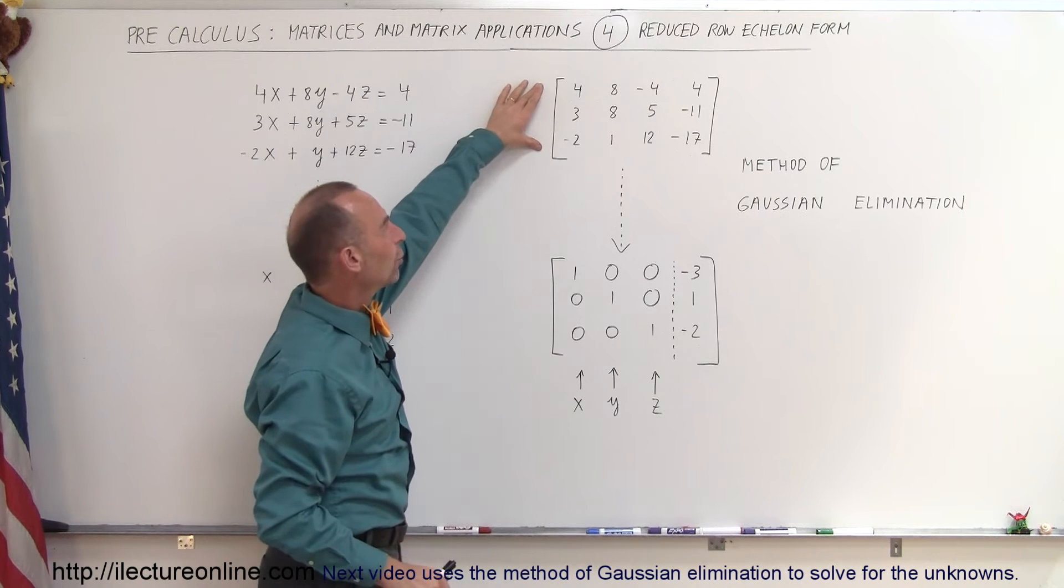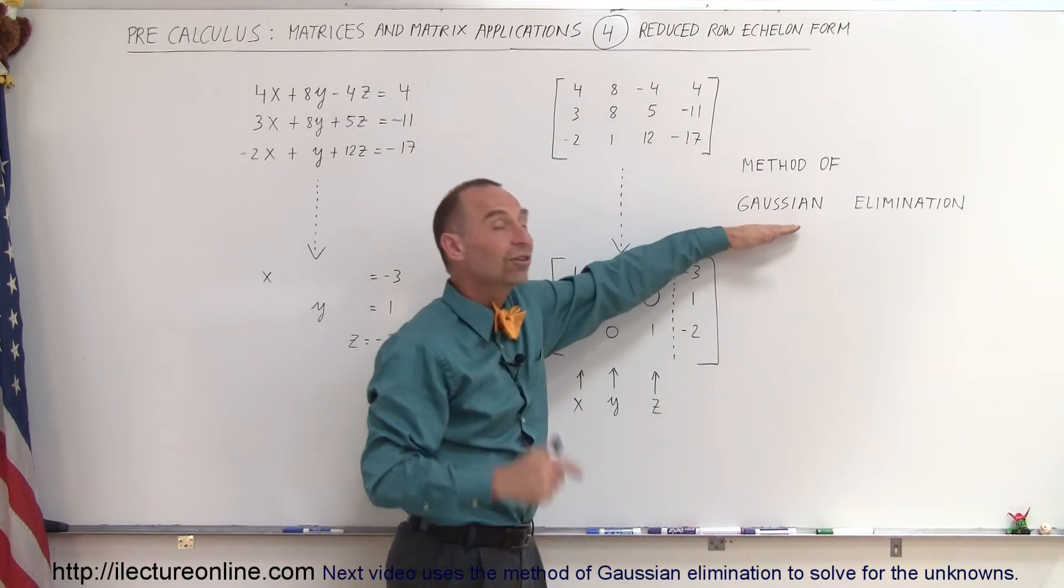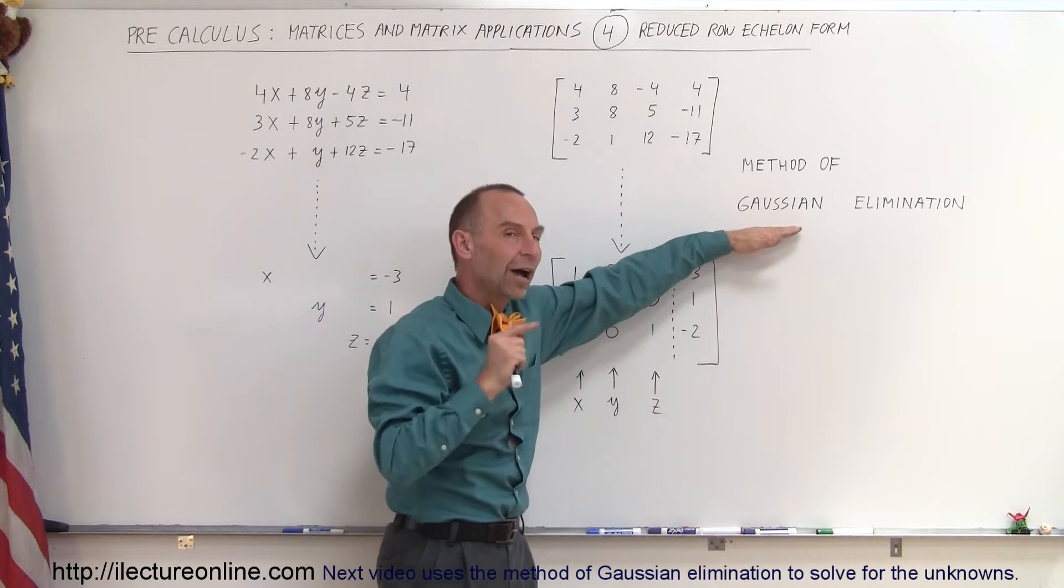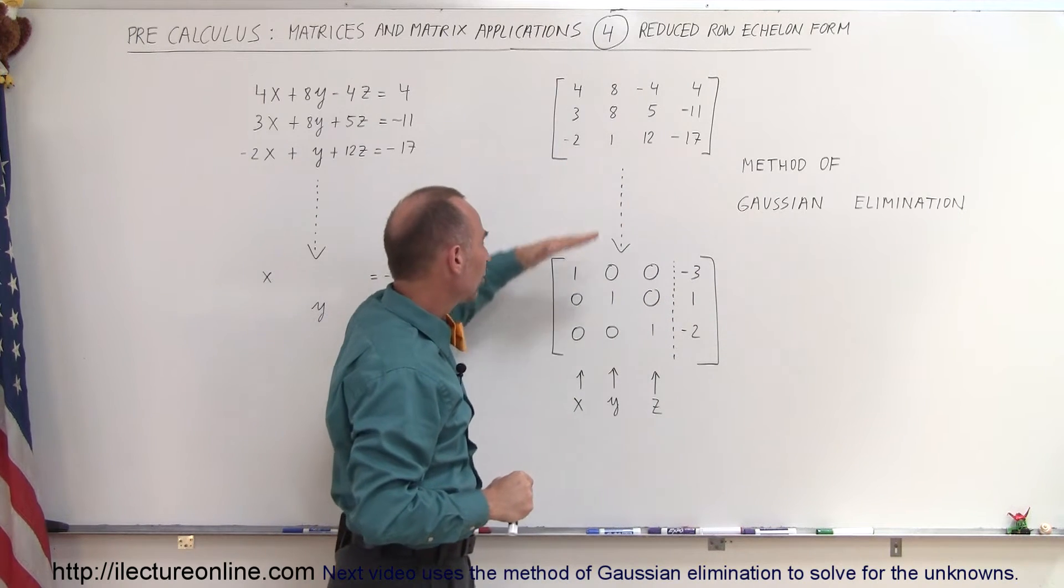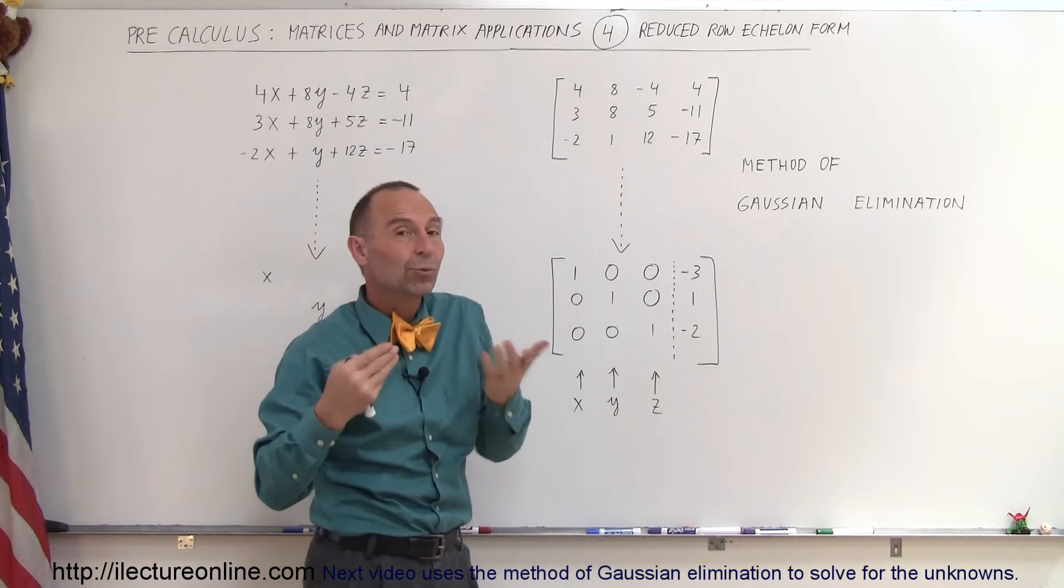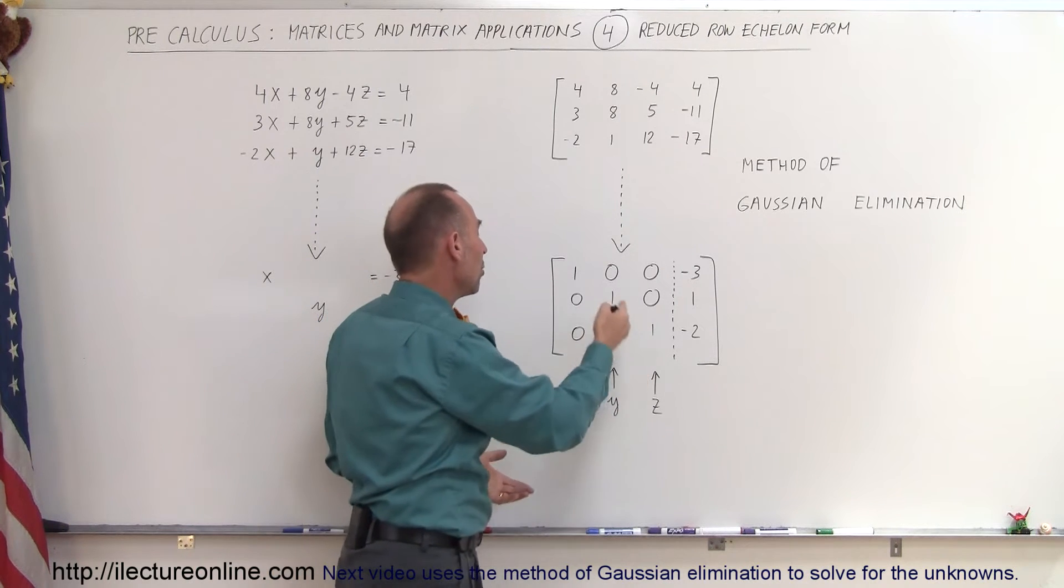If we take this form of the equation and through a method called the Gaussian elimination which we'll show in the next video how to do, we get this matrix to look like this matrix. We can simply read out the solution for Z, Y, and X.